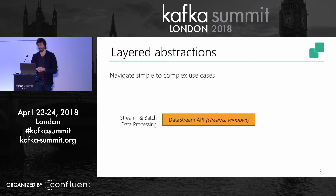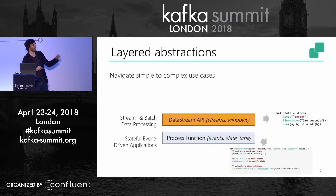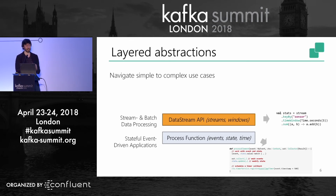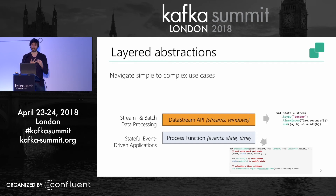Flink has a bunch of layered APIs to define streaming computations. The API most folks start with is the DataStream API, centered around streams and windows — I'll have an example in larger print later. There's also a more low-level API that gives you raw access to the core components of Flink: streaming events, state with a very flexible notion — state in various shapes with persistence and exactly-once guarantees — and time.